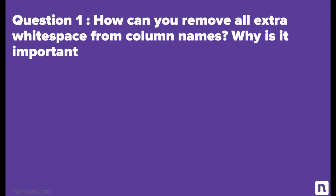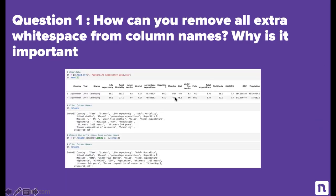Let's start with the coding questions. The first question is: how can you remove all extra white spaces from column names in a data frame, and why is it important? Let's look at the solution. Here I'm using the life expectancy data set, the same data set used for linear regression. I'm using the dot columns function to print the column names. In case of country and year, there isn't any extra white space. But in case of thinness five to nine years, there is extra white space. Now we need to remove this extra white space.